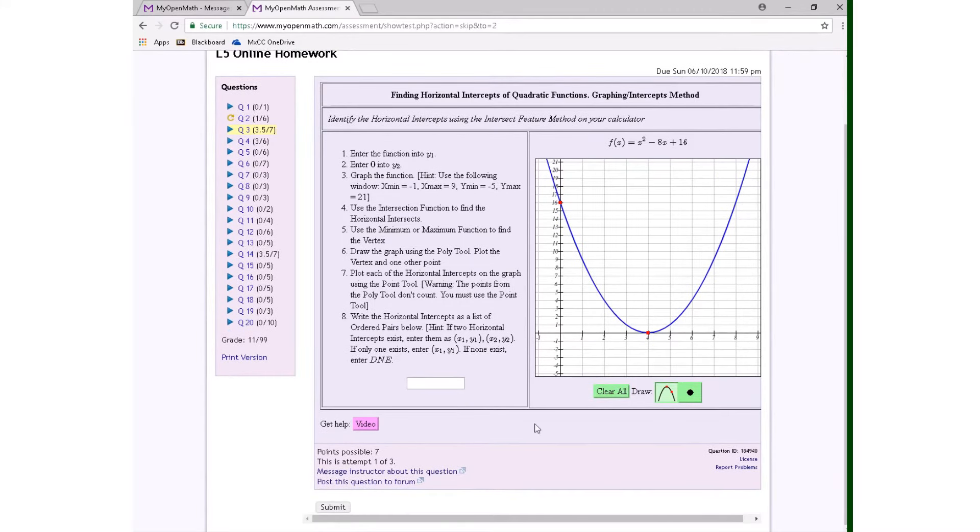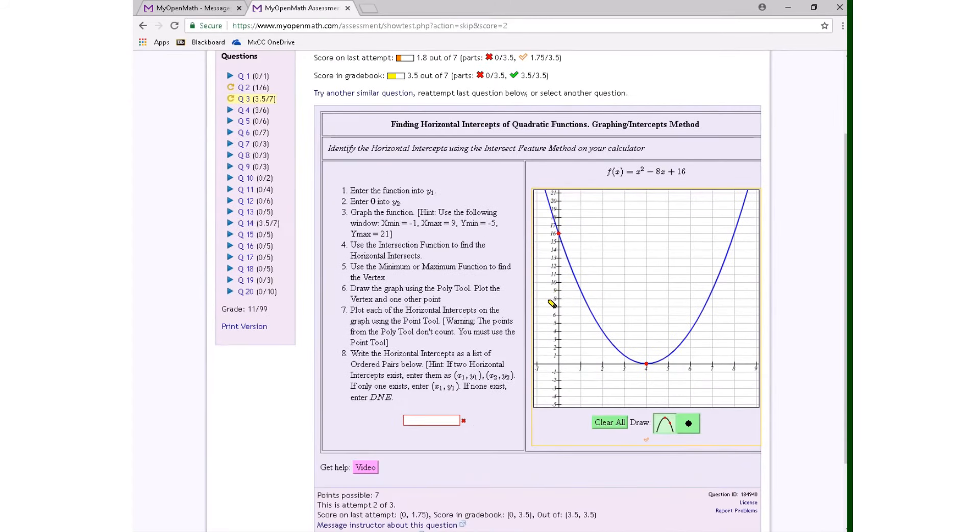Again, that is the correct graph of this function. However, if I just submit that, I'll get the yellow box. The problem is that it says to plot each of the horizontal intercepts on the graph using the point tool. So that's the warning here: the points from the poly tool don't count. You must use the point tool.